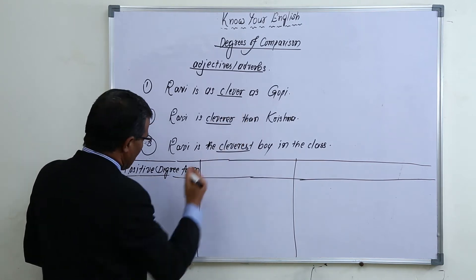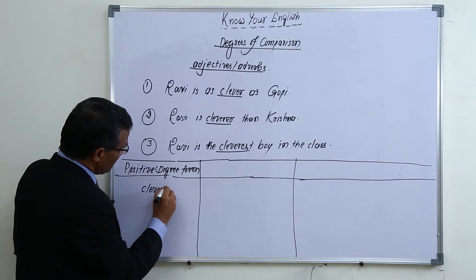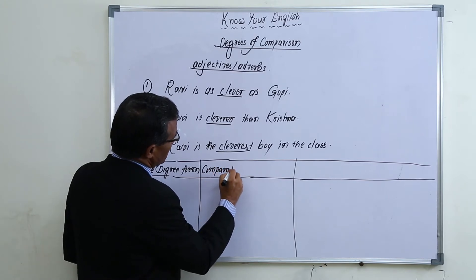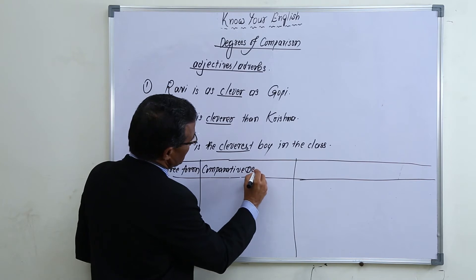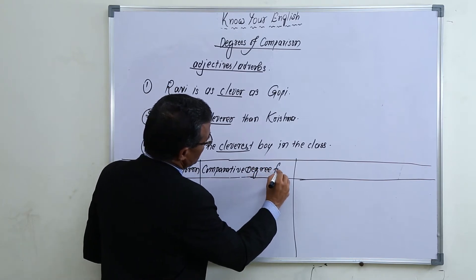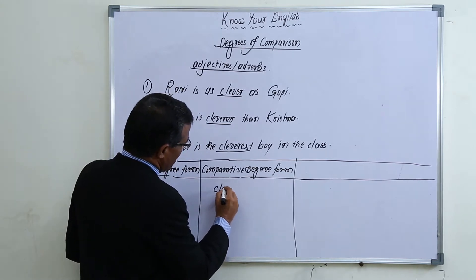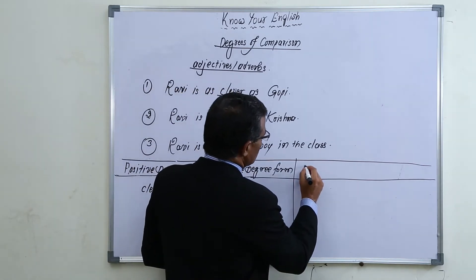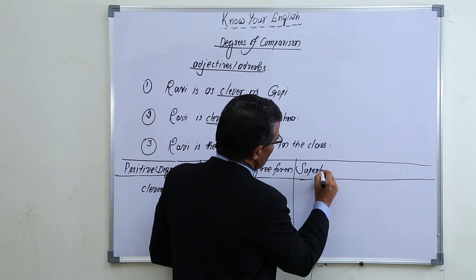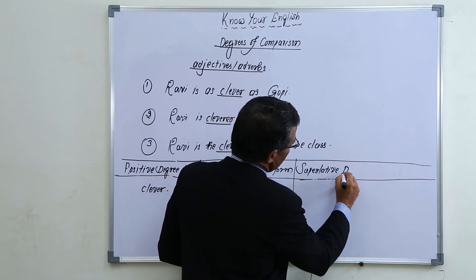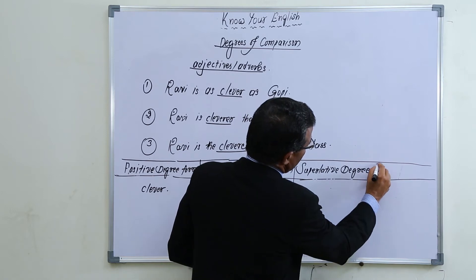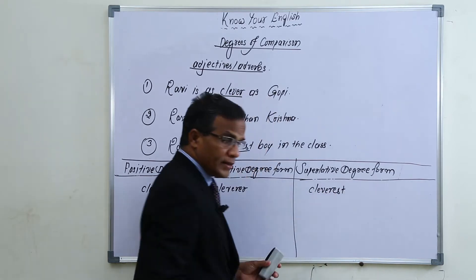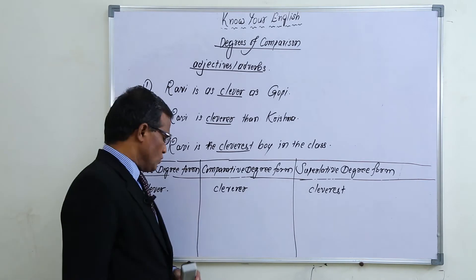'Clever' comes under positive degree form, 'cleverer' comes under comparative degree form, and 'cleverest' comes under superlative degree form. I'll show you some more forms of adjectives.